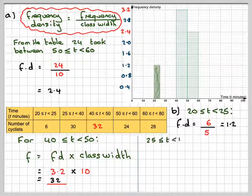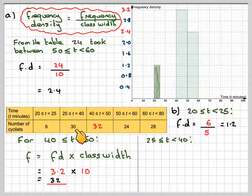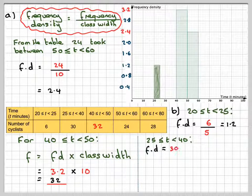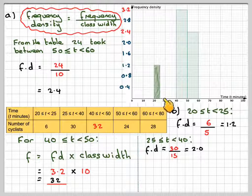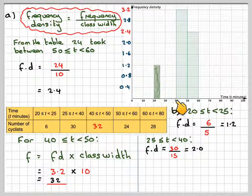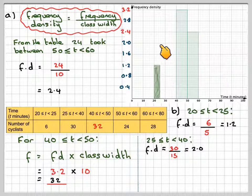And then for 25 to 40, the class width is 15, the frequency is 30. So it's going to be 30 divided by 15, which is 2. Therefore, from between 25 and 40, the height will go up to 2, which will be up to here.